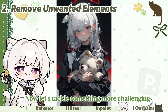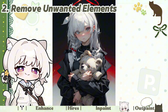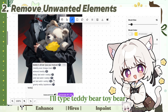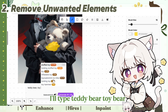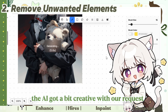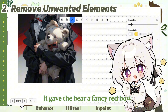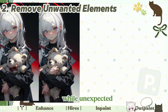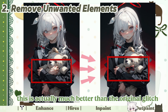Now let's tackle something more challenging: extra limbs. In this case, since there's a teddy bear nearby, I'll type 'teddy bear, toy bear.' The AI got a bit creative with our request — it gave the bear a fancy red bow instead of just removing the hand. While unexpected, this is actually much better than the original glitch.